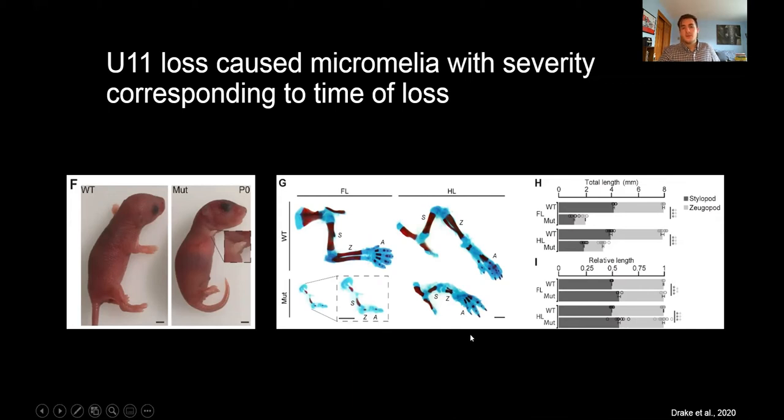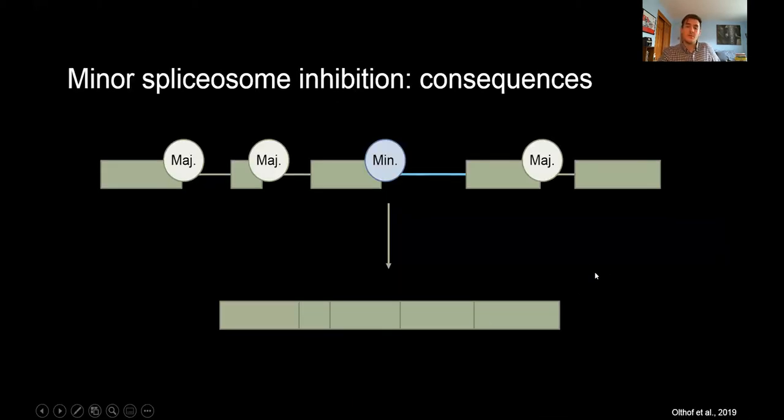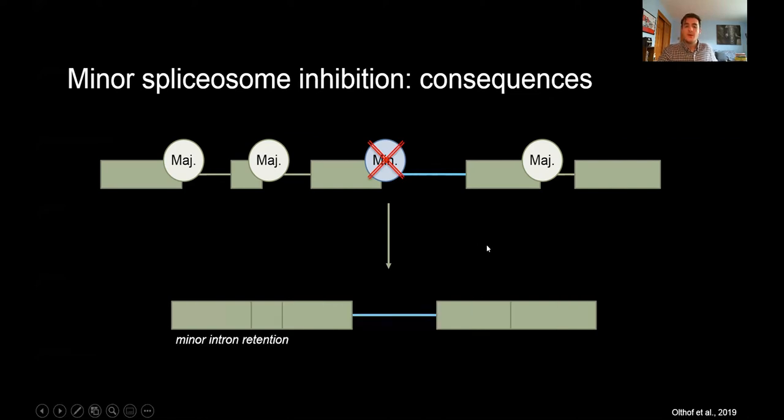To understand this, we must understand what happens when we inhibit the minor spliceosome. Simply, when we cause U11 loss, we're inhibiting the minor spliceosome, which one outcome that is predicted is minor intron retention. The problem with minor intron retention is that this invariably leads to the introduction of a premature stop codon, which then triggers either mRNA degradation or leads to the production of an aberrant protein. Nonetheless, you are losing what should be encoded by this MIG transcript.